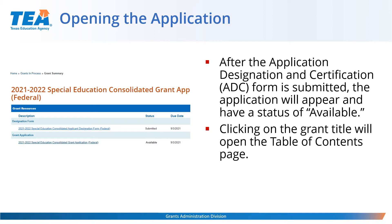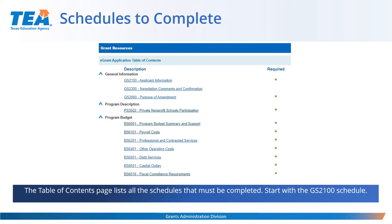After the Application Designation and Certification form has been submitted, the application will appear with a status of available. Clicking on the grant title will open the table of contents page, which shows all of the schedules that must be completed. Please start with the GS2100 schedule.